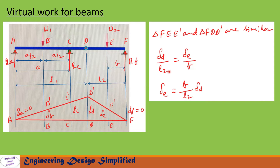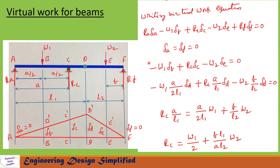From the two similar triangles FE-E' and FD-D' on the second beam, we can write delta_E = (b/L2) * delta_D. Now writing the virtual work equation: Ra*delta_A - W1*delta_B + Rc*delta_C - W2*delta_E + Rf*delta_F = 0. Since delta_A and delta_F equal zero, substituting delta_B, delta_C and delta_E in terms of delta_D and simplifying, we get Rc = W1/2 + (b*L1)/(a*L2) * W2.